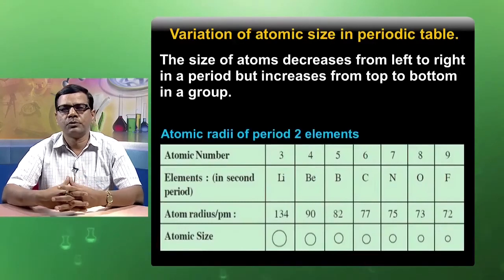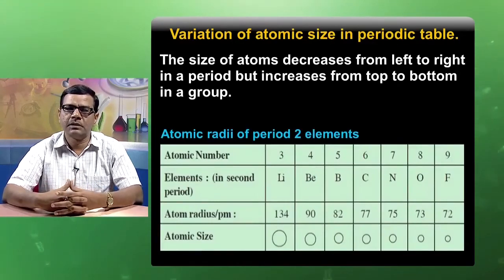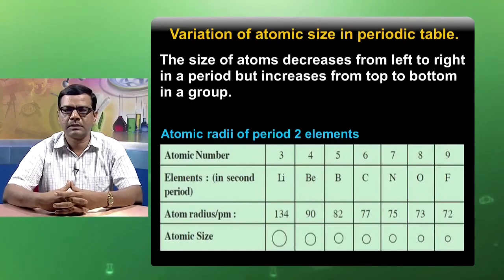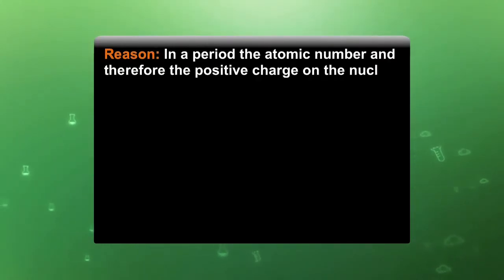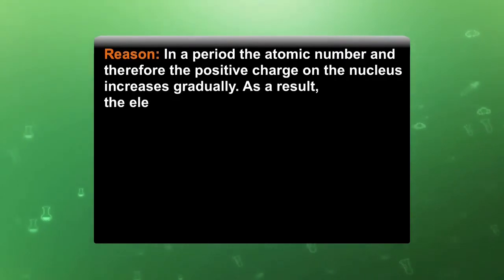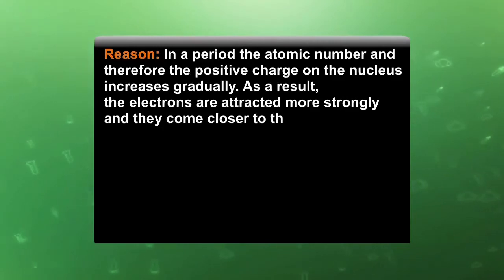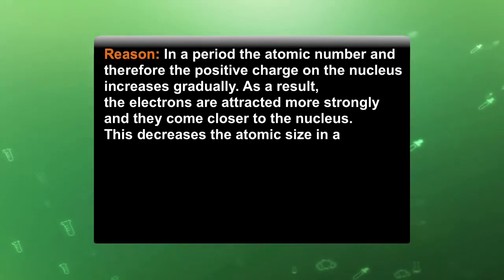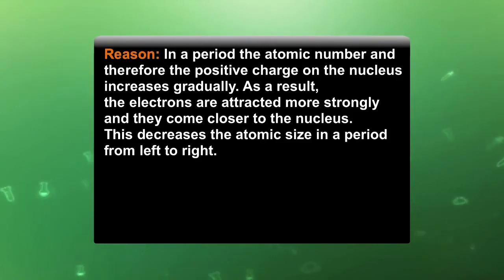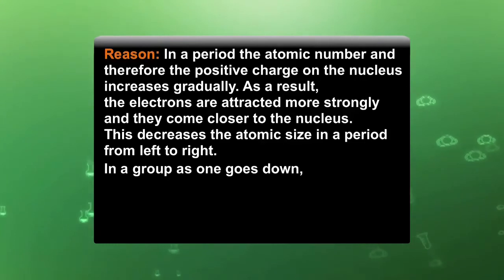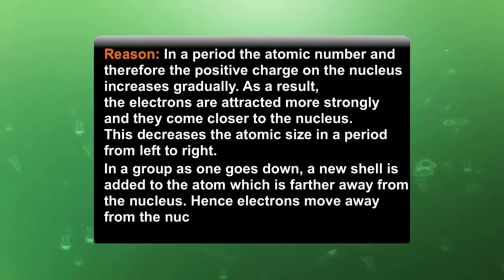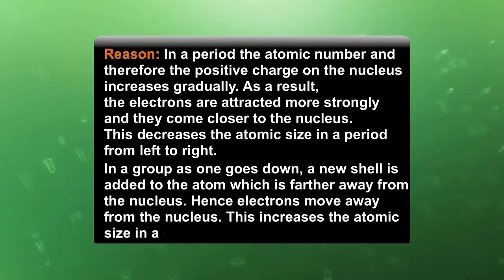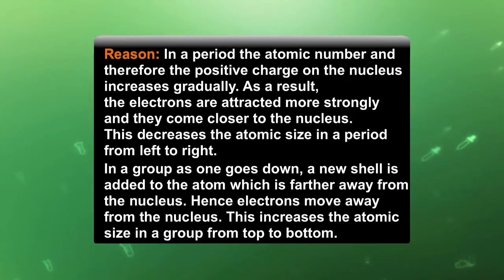This table shows the variation of atomic size from left to right — the size of an element in a particular period decreases from left to right. The reason is that in a period, the atomic number and therefore the positive charge of the nucleus increases gradually; as a result, electrons are attracted more strongly and come closer to the nucleus, decreasing atomic size from left to right. In a group, as one goes down, a new shell is added to the atom which is further away from the nucleus, so electrons move away from the nucleus, increasing atomic size from top to bottom.